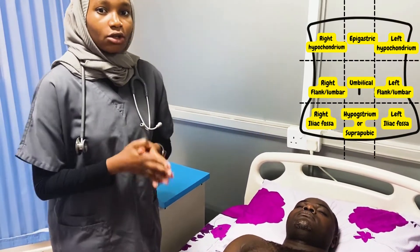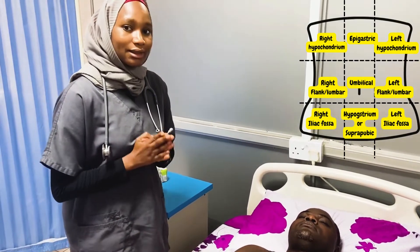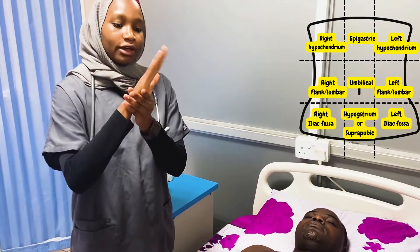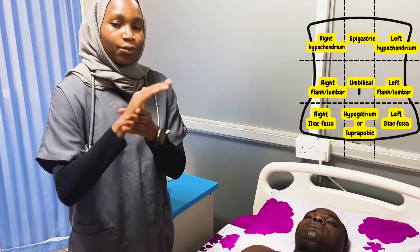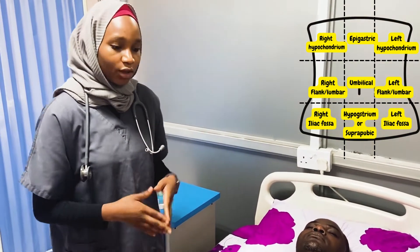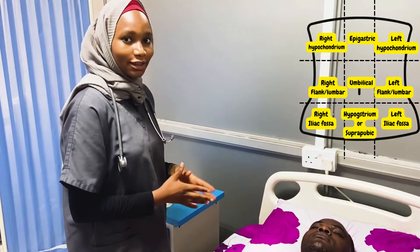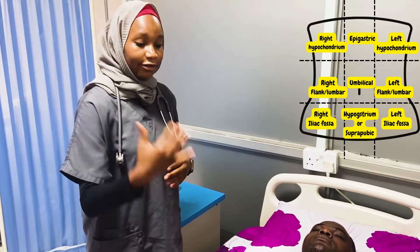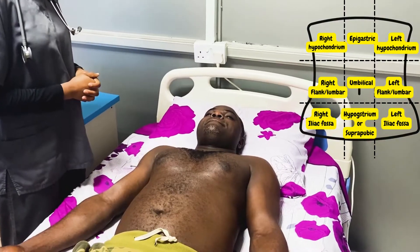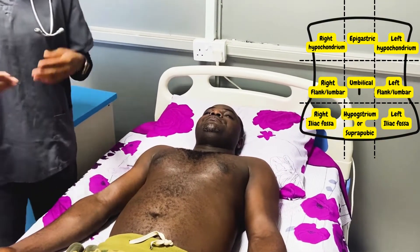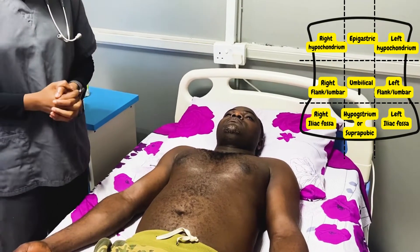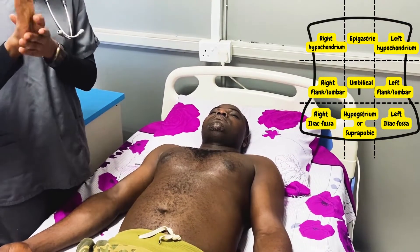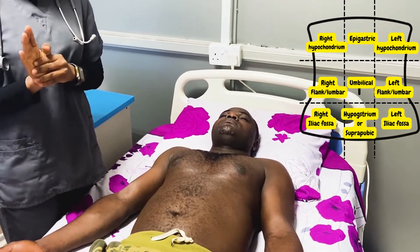For light palpation, we're going to be systematic in palpating all nine regions of the abdomen with the flat of our hands, moving at the metacarpophalangeal joints. What we're looking for is any tenderness or rigidity. But before we begin, we have to ask the patient if they have any pain, and when there is pain, we have to start away from it. Sir, do you have any pain in your abdomen? Given the patient doesn't have any pain, we'll now begin superficial palpation, being systematic and using the flat of our fingers moving at the metacarpophalangeal joint.